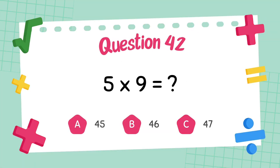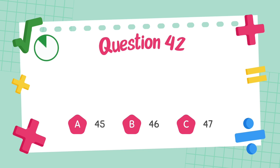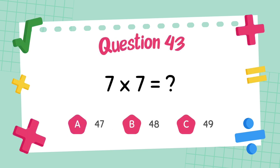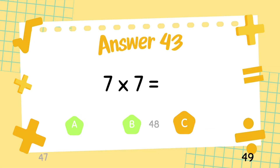What is 5 multiply 9? The answer is 45. What is 7 multiply 7? The answer is 49.